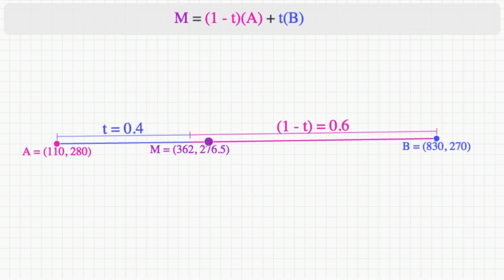We wrote the weighted average m of two points, a and b, as m equals 1 minus t times a plus t times b. The parameter t controls the weight and therefore the position of where m is along a and b. Recall also that the weights in front of a and b have to add up to 1 to represent a proper average.